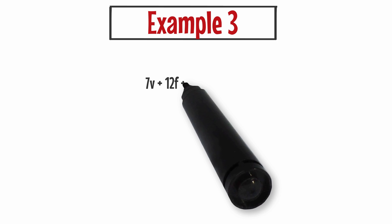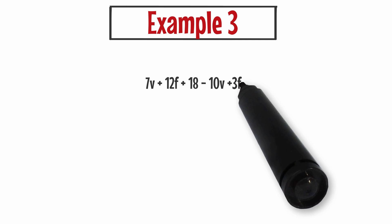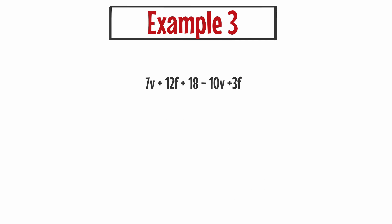Example number three. Let's say I have a longer expression and it has more than one variable this time. Remember a variable is just a fancy way of saying a letter. So this expression has more than one letter. Let's say the expression is 7v plus 12f plus 18 minus 10v plus 3f. I'm going to combine all items that are the same. For this particular expression, I'm going to pretend like my Vs are violins and my Fs are flutes.